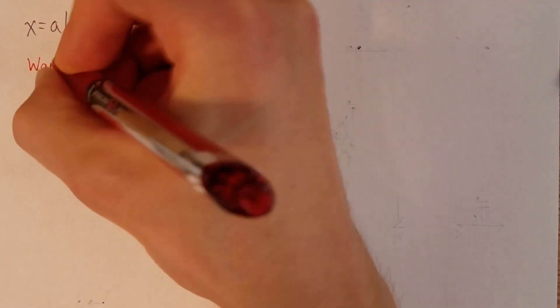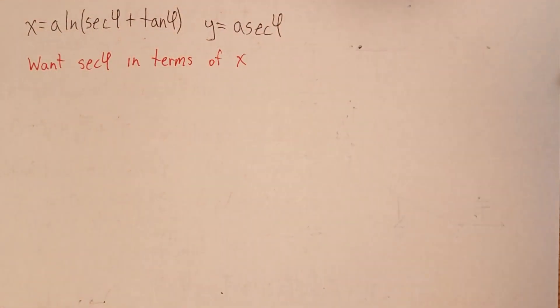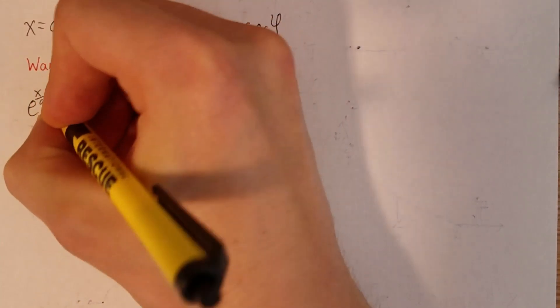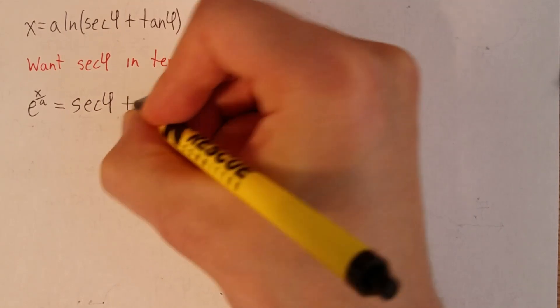So now we have equations for x and y in terms of φ. And to get y as a function of x, we'll first need to find secant φ in terms of x. So taking the expression for x, we can divide by a and exponentiate to see that e to the x/a is secant φ plus tangent φ.